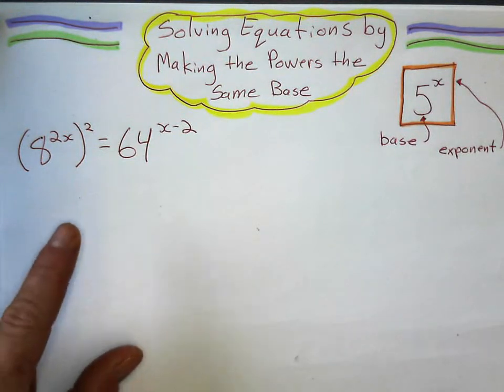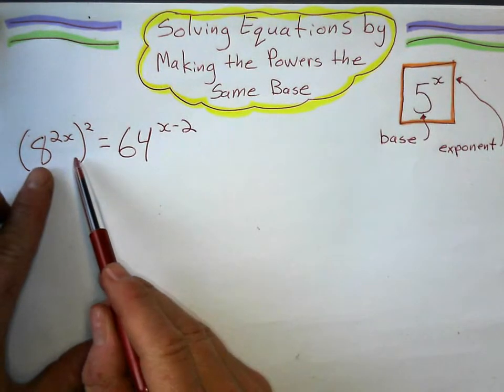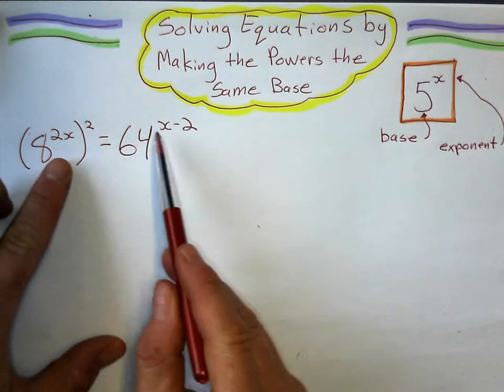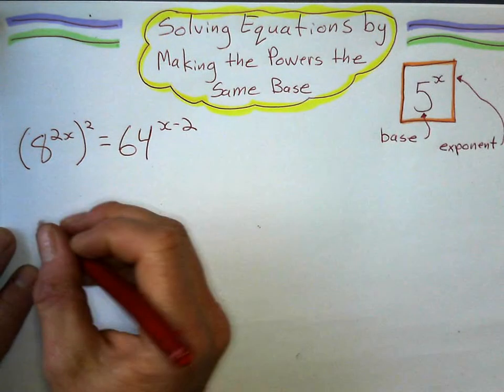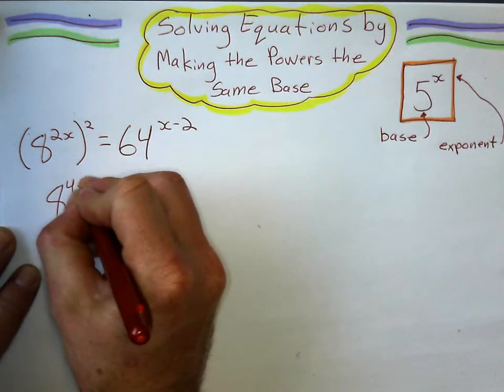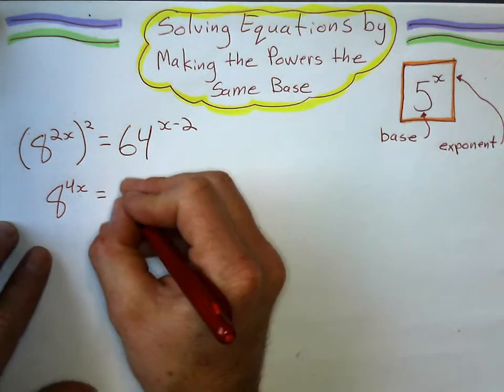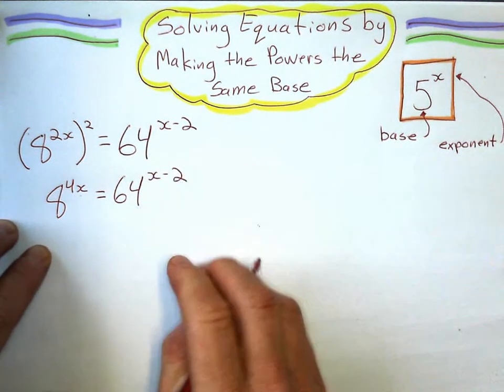Let me show you how I look at this one. We have to remember index rules, and I'm going to solve for x here. The first thing I'm going to do is power to a power gets multiplied. So this is going to be 8 to the power of 4x equals 64 to the power of x minus 2.